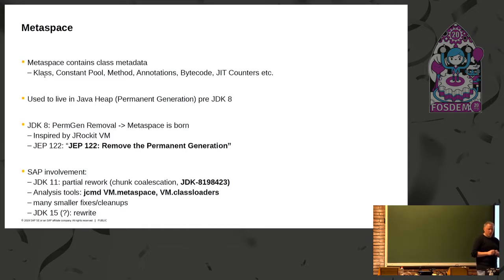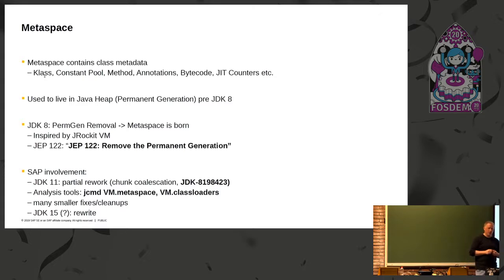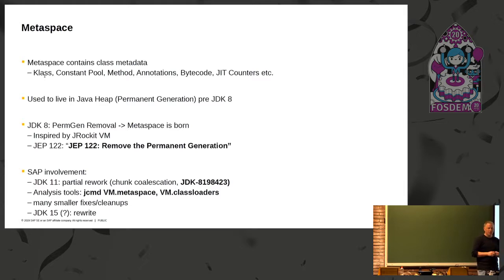All this stuff used to live in the Java heap in ancient times in something called the permanent generation, and this had a number of disadvantages. It was difficult for users to configure correctly — difficult to size — and because it had a built-in limit, it couldn't grow beyond the size of the permanent generation. It was also difficult to work with because GC compacted it — it was not stable. So it was decided to move all that stuff to native memory. This was inspired by JRockit VM, which had been acquired by Oracle, and it became JEP 122 — the birth of Metaspace.